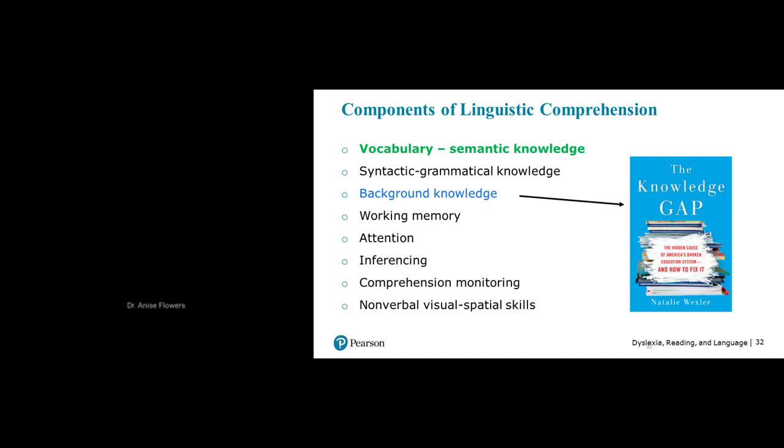Wrapping up the simple view of reading formula, the second major component is linguistic comprehension. It encompasses vocabulary skills, understanding of syntax and grammar, background knowledge — referencing a book on the importance of background knowledge research — working memory, attention, inferencing, comprehension monitoring as you read, and nonverbal visual-spatial skills.